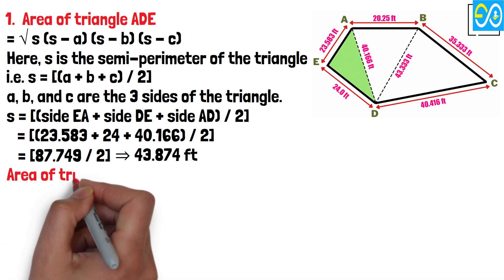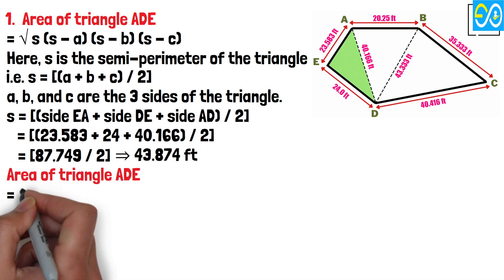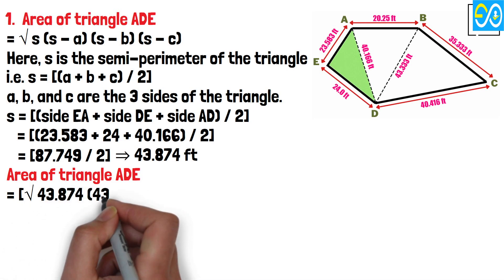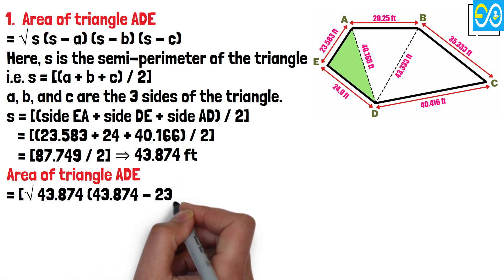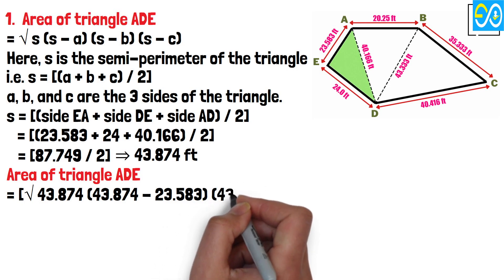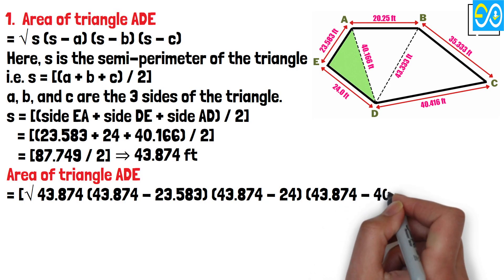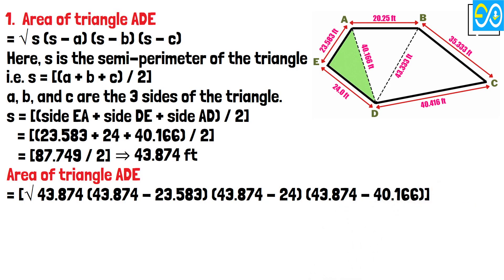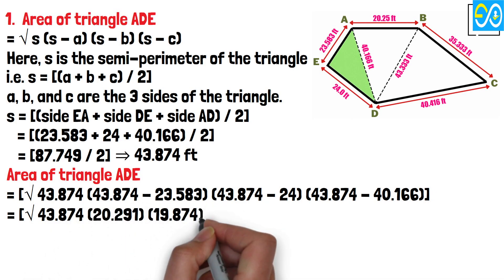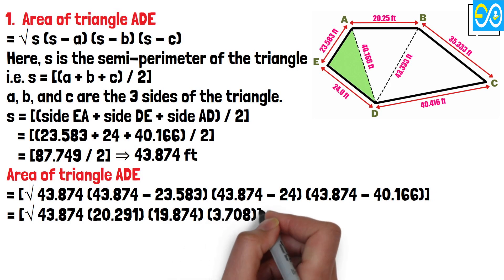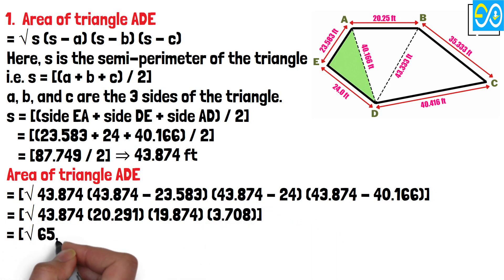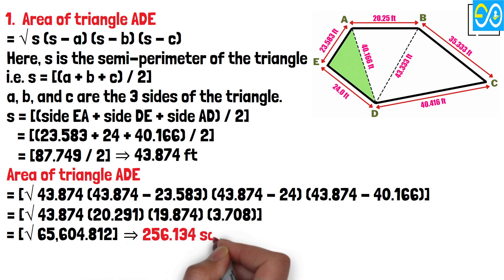Area of triangle ADE equals square root 43.874 times (43.874 minus 23.583) times (43.874 minus 24) times (43.874 minus 40.166). Equals square root 43.874 times 20.291 times 19.874 times 3.708. Equals square root 65,604.812 equals 256.134 square feet.